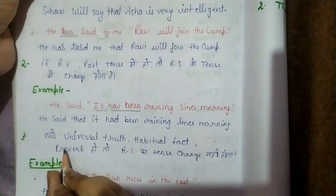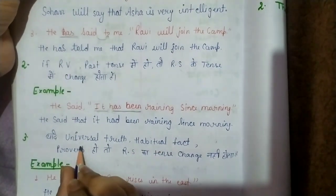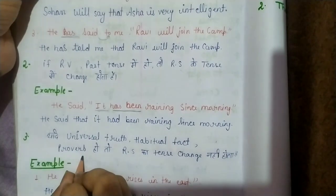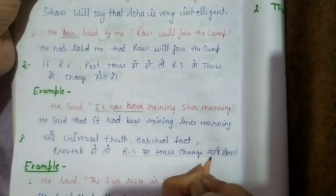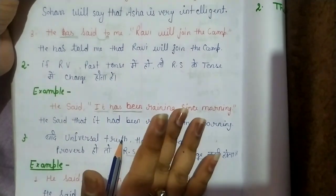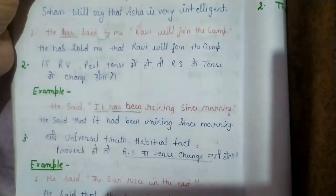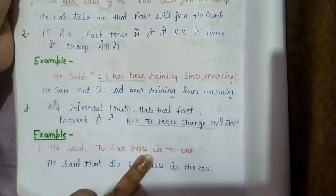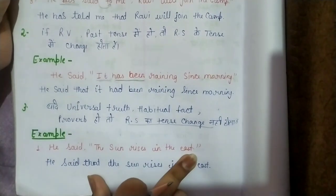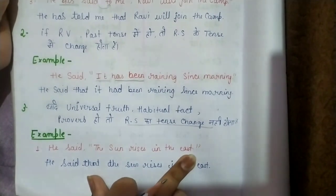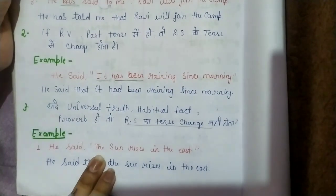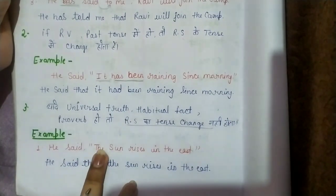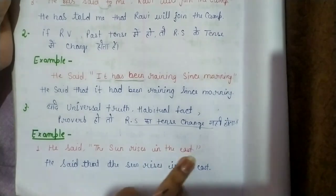Next rule: if there is a universal truth, a habitual fact, or a proverb — in reporting speech there is no change in tense. You will not do any change. For example: He said — the sun rises in the east. The sun rises in the east — this is a universal truth, so the answer is: He said that the sun rises in the east.